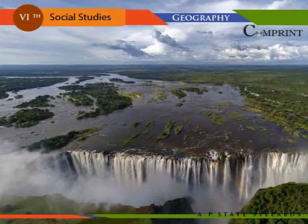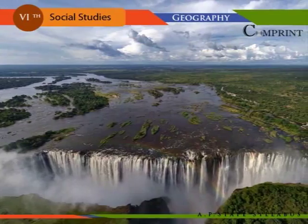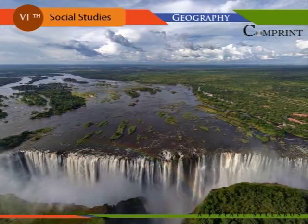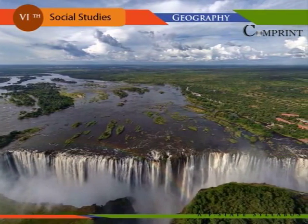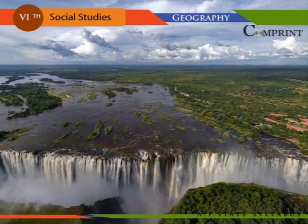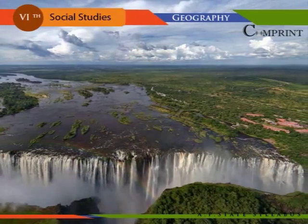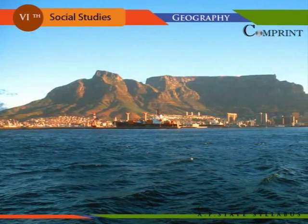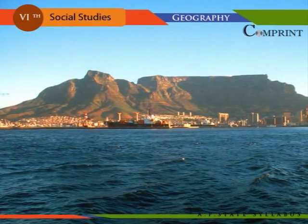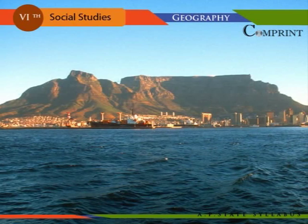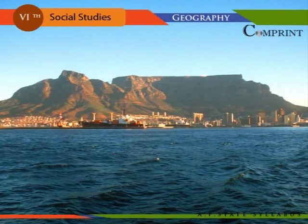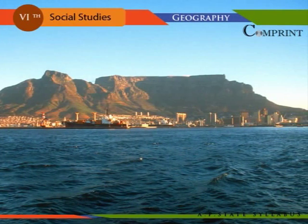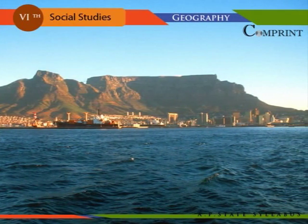The Victoria Falls drop from a height of about 108 meters and their width is about 1.7 kilometers. The Table Mountain in the center of the city is a special attraction, with its surface of smooth sandy rock slab.